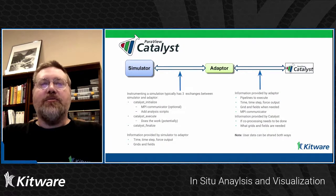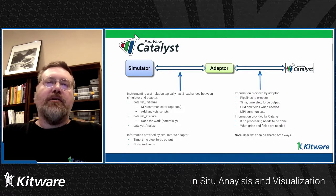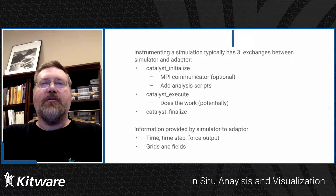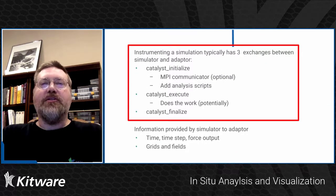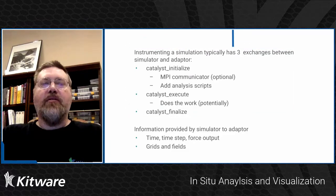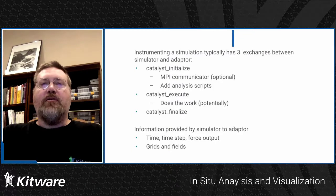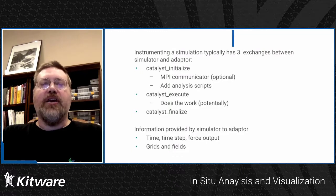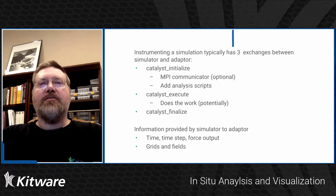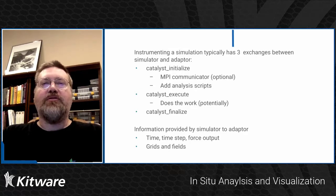Let's talk about how to instrument your simulation with Catalyst. Usually that's done by writing an adapter, and that adapter will interact with your simulation at three points. At initialization, you'll provide an MPI communicator if you're running in distributed memory mode, and you'll add some analysis scripts. Then at each time step, you'll run an execute method that invokes Catalyst to perform the actual work using the simulation state. Finally, before your simulation shuts down, you'll call finalize — that allows things we're accumulating results to write those final accumulations out before the simulation exits.